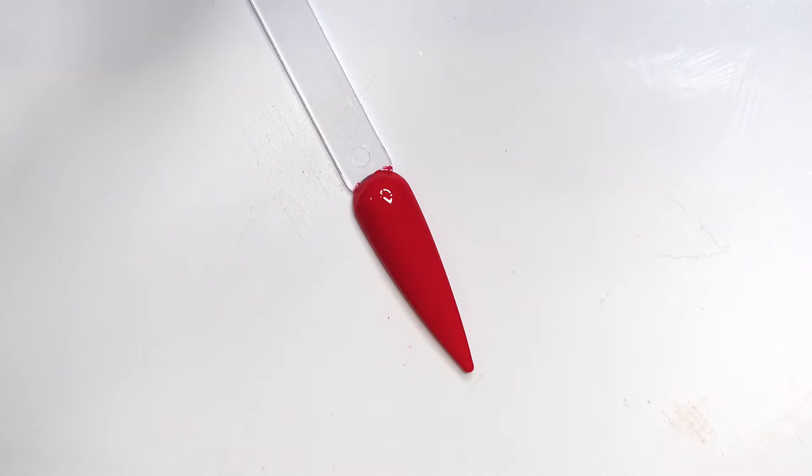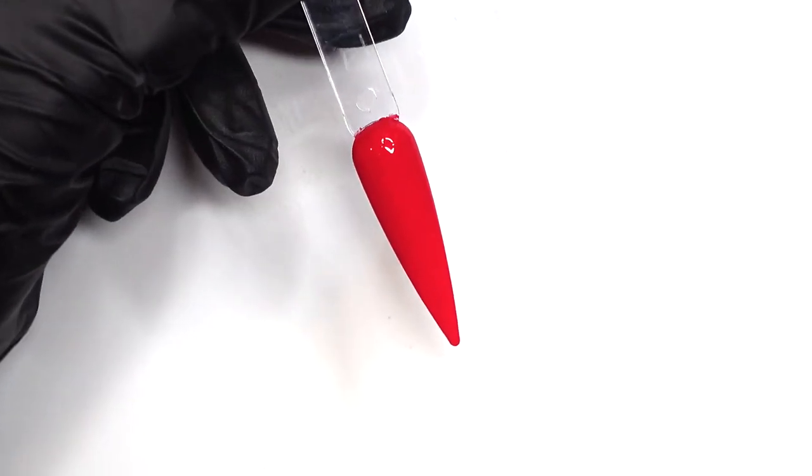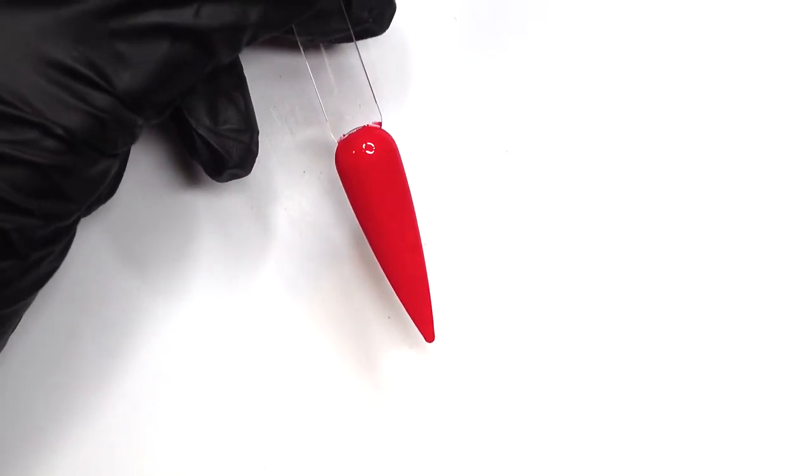Using a dotting tool, we are going to be learning how to draw a heart. If you don't have a dotting tool, you can always use something that just has a round point at the end.